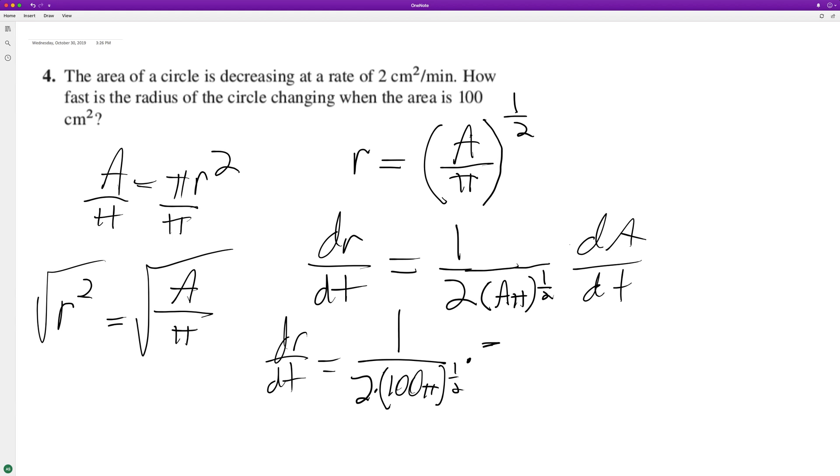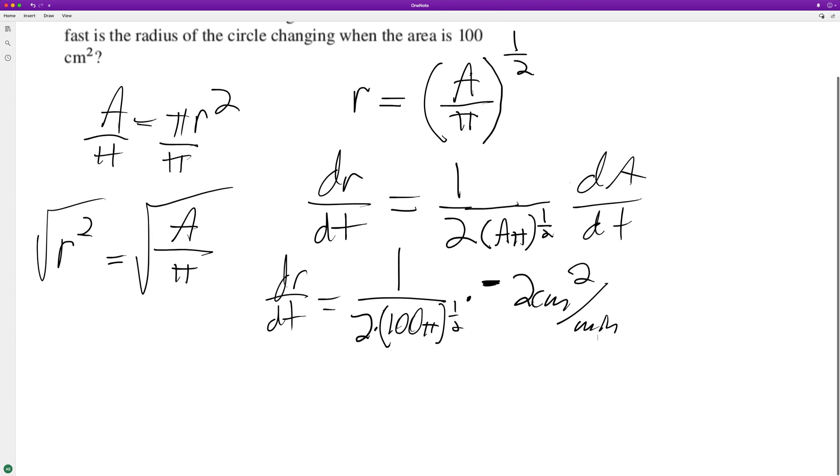At the current rate it's decreasing at negative 2 centimeters squared per minute. So dr/dt - the negative two and this two cancel.